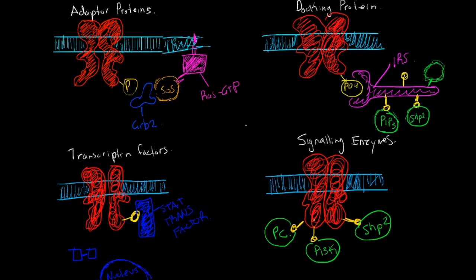Signaling enzymes include protein kinases, protein phosphatases, lipid kinases, phospholipases, and GTPase activating proteins. When equipped with SH2 domains, these enzymes associate with activated RTKs and turn on directly or indirectly. There are three general mechanisms by which these enzymes are activated following association with the RTK: they can be activated by translocation within the membrane, through an allosteric mechanism such as a change in conformation, and they can also be regulated by phosphorylation. These are all very important for different responses and processes in multicellular organisms.